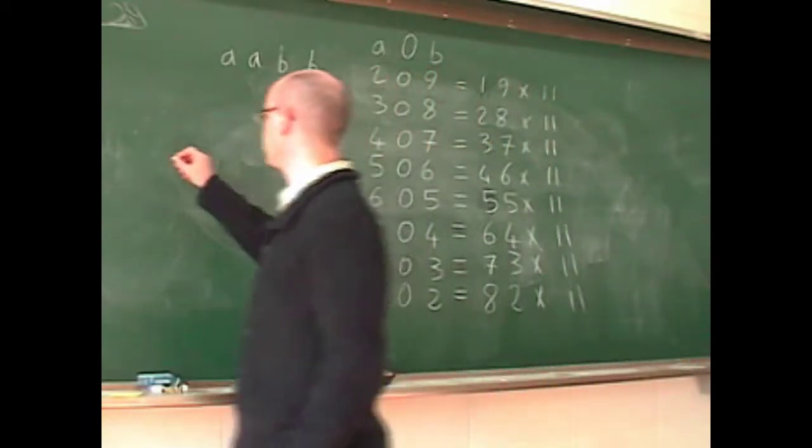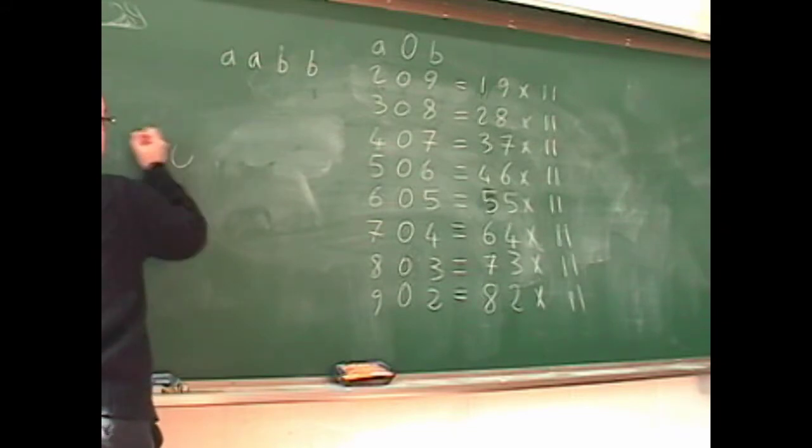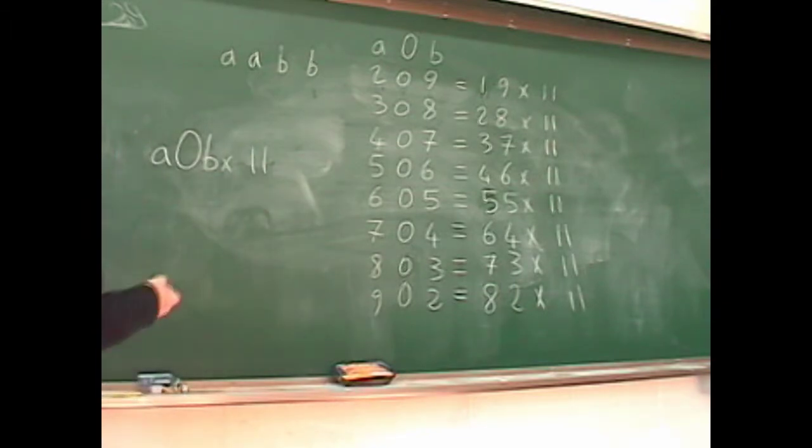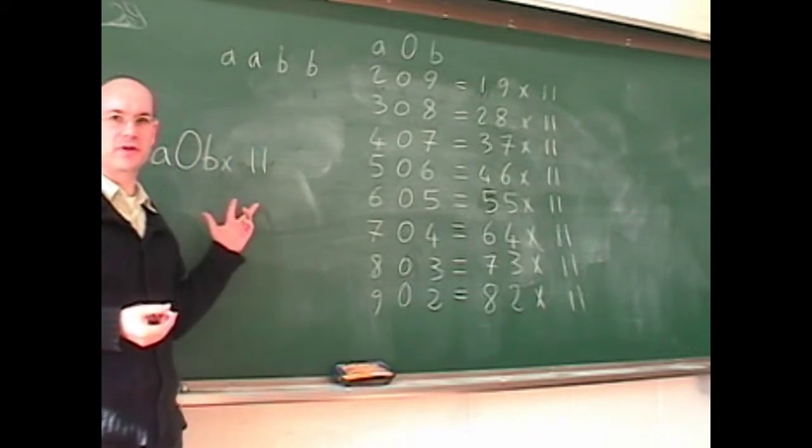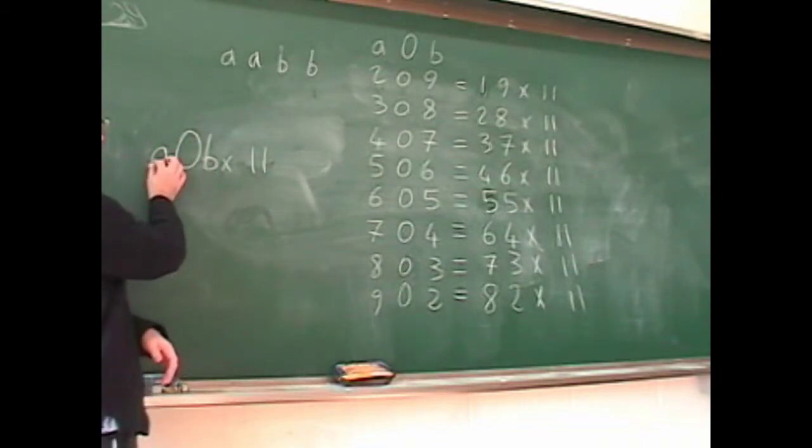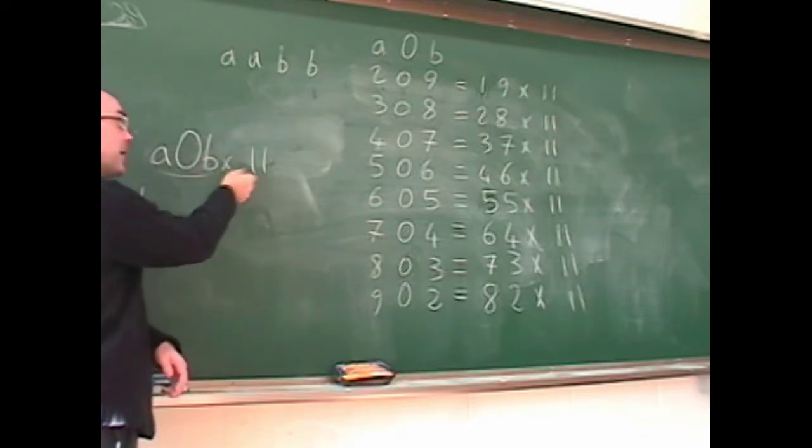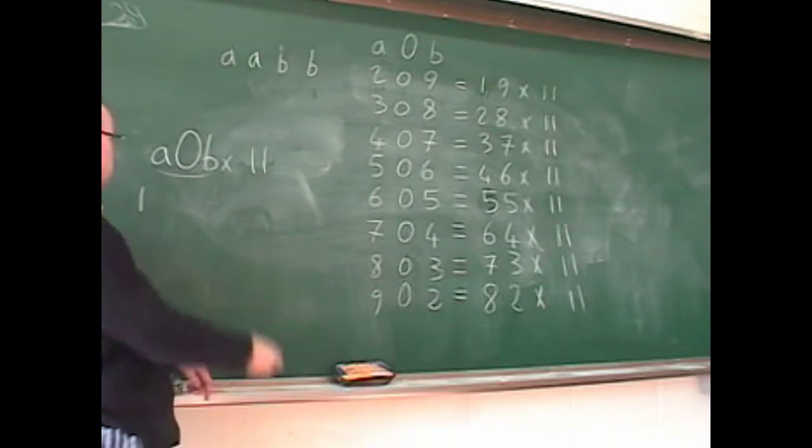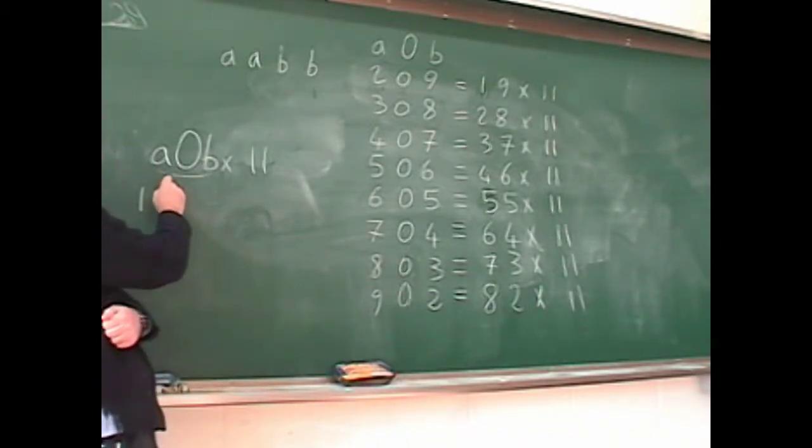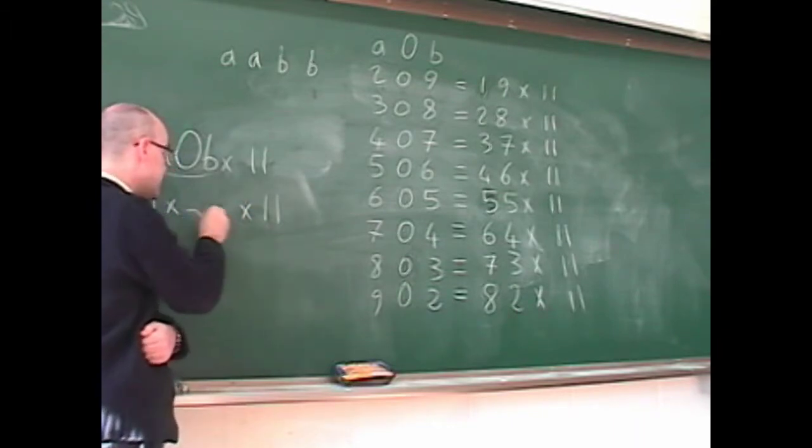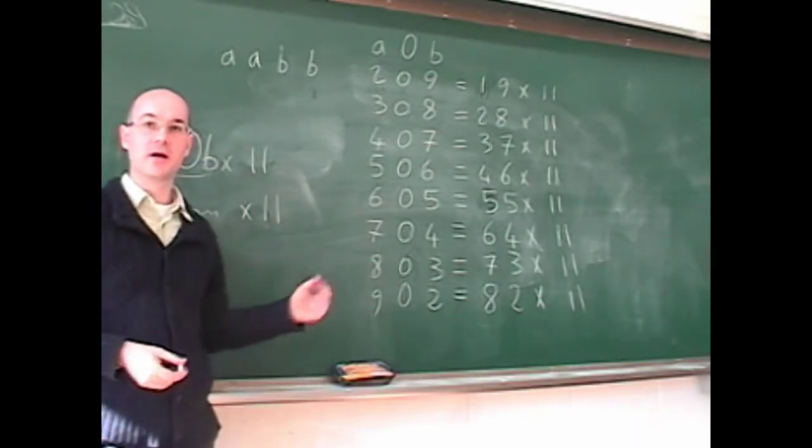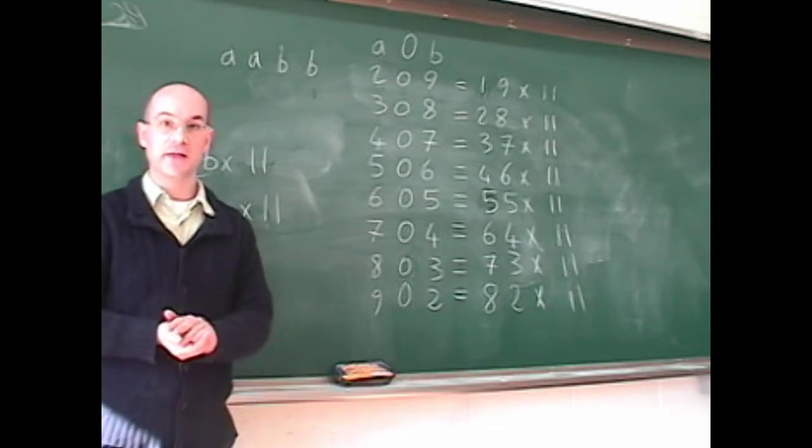So we have A0B multiplied by 11. This A0B is a perfect square, which means that A0B by 11 is a perfect square. So A0B should be 11 multiplied by something, multiplied by this 11. So this something, for everything to be a perfect square, this something is also a square.